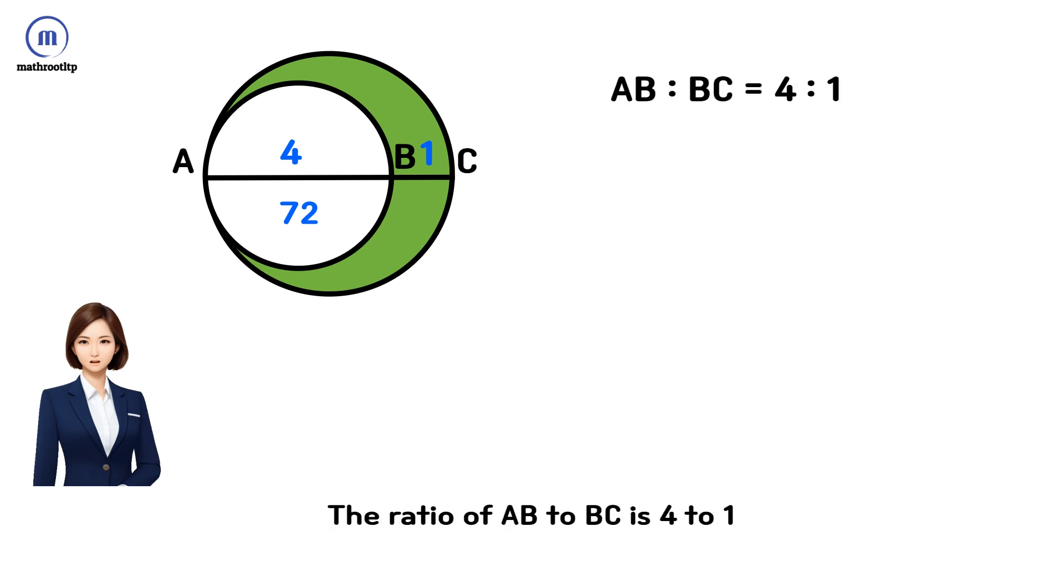The ratio of AB to BC is 4 to 1. Let's assume that the length of AB is 4a and the length of BC is a. The radius of the smaller circle is 2a.